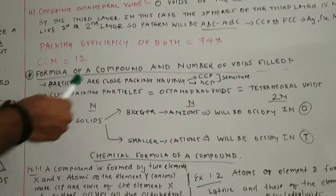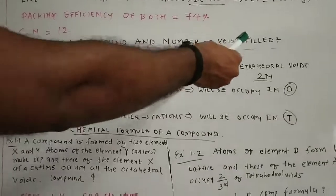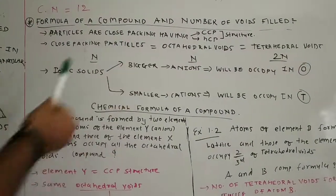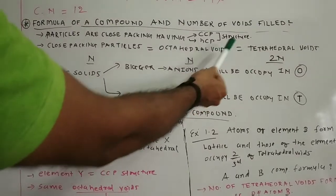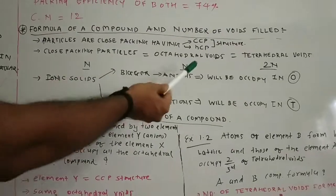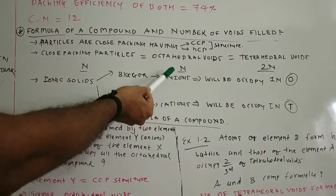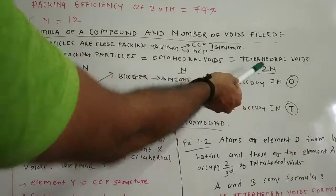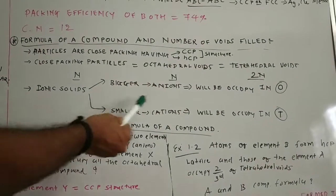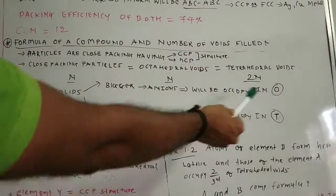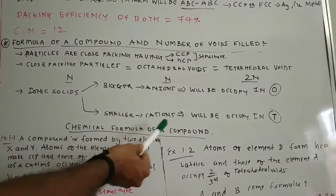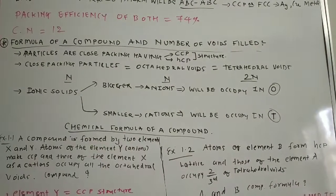Now the second topic — formula of a compound and the number of voids filled. Particles are close packed in CCP and HCP structure. If close packing particles are N, then octahedral voids are also N, but tetrahedral voids are double, that is 2N. In ionic solids, the bigger ions — that is the anions — occupy the octahedral voids, and the smaller ions — the cations — occupy the tetrahedral voids.